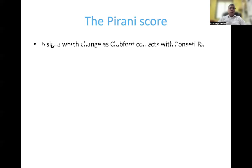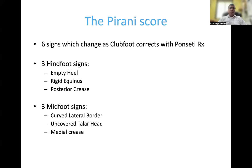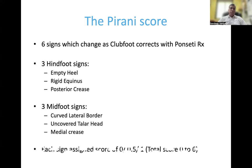Coming to the Pirani score proper, there are 6 signs which change as the clubfoot corrects with Ponseti treatment. These consist of 3 hindfoot signs — the empty heel, rigid equinus, and posterior crease — and 3 midfoot signs — the curved lateral border, the uncovered talus head, and the medial crease. Each sign is assigned a score of 0, 0.5, or 1, giving a total score ranging from 0 in a completely corrected foot to 6 in a completely uncorrected foot.